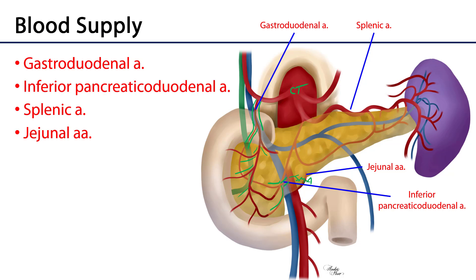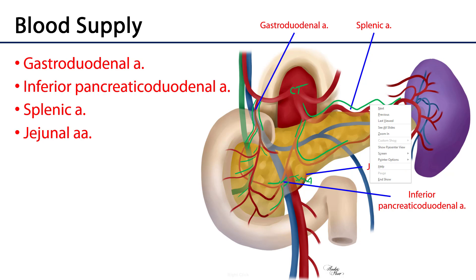The splenic artery is a very robust and tortuous branch of the celiac trunk, giving rise to many important branches supplying the pancreas: the dorsal pancreatic artery, which is contiguous with the inferior pancreatic artery; the greater pancreatic artery; the artery to the tail of the pancreas; and branches of jejunal arteries from the superior mesenteric artery that can also supply blood to the pancreas.